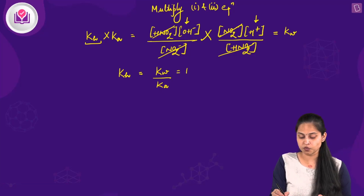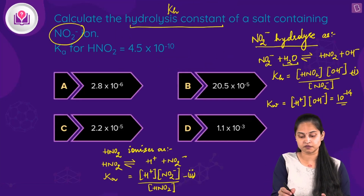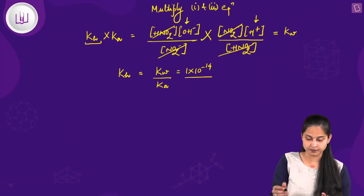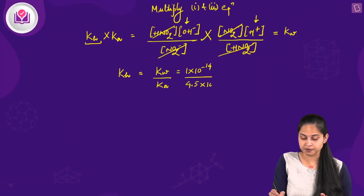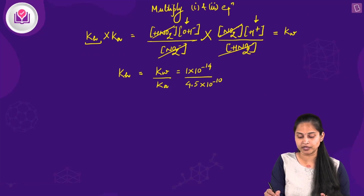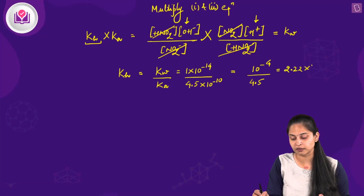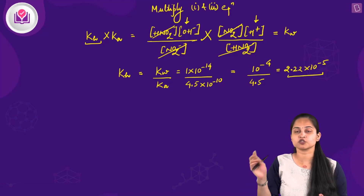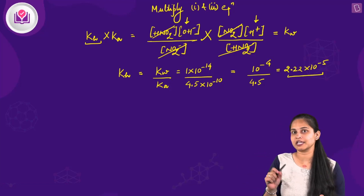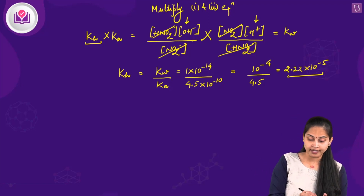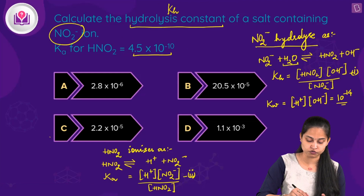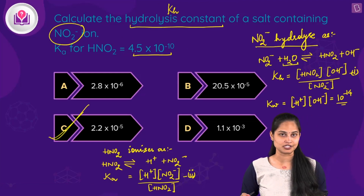Substituting values: Kw = 1 × 10⁻¹⁴ and Ka = 4.5 × 10⁻¹⁰ for nitrous acid. KH = 10⁻¹⁴ / (4.5 × 10⁻¹⁰) = 10⁻⁴ / 4.5 ≈ 2.22 × 10⁻⁵. The hydrolysis constant is 2.22 × 10⁻⁵, so option C is the correct answer.